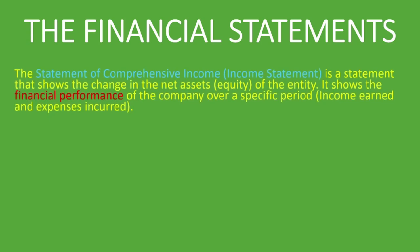The statement of comprehensive income, otherwise known as the income statement, is a statement that shows the change in the net assets or the equity of the entity. It shows the financial performance of the company over a specific period — that is, income earned and expenses incurred. So when we look at the income statement, we see what the income is and what the expenses are.